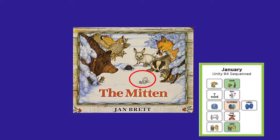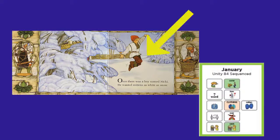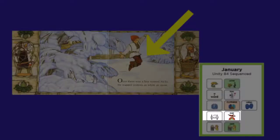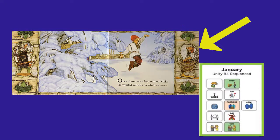There's a fox and a bear and an owl and a rabbit. I wonder what that is. What do you think this story will be about? Let's take a picture walk and find out. I see a boy jumping over the snow. I wonder who that lady is. Let's turn the page and see what else we can find.